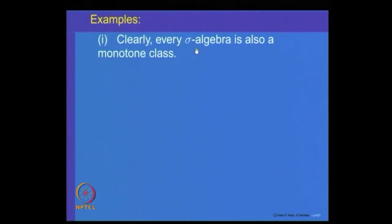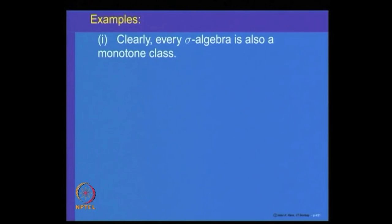Why is that true? Because a sigma algebra is a collection of subsets of X which is closed under any countable unions. Because it is closed under countable unions, it will also be closed under increasing unions. If a sequence A_n is decreasing in a sigma algebra, then the complements form an increasing sequence, and since a sigma algebra is closed under complements and countable unions, the intersection of A_n also belongs to it.